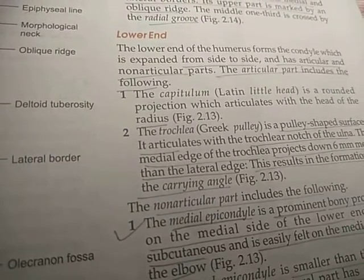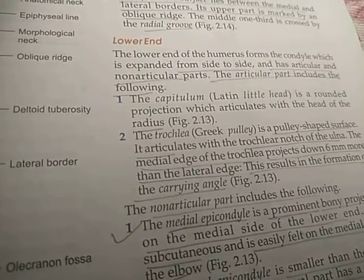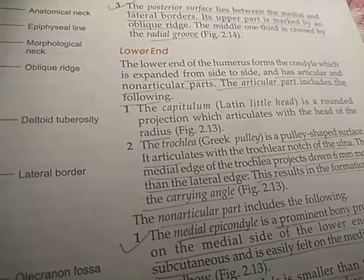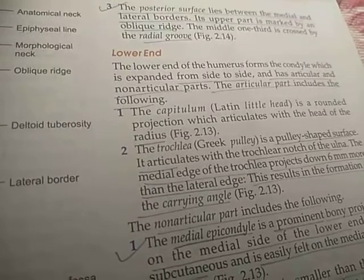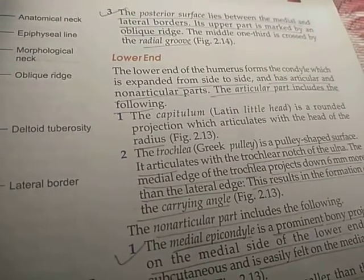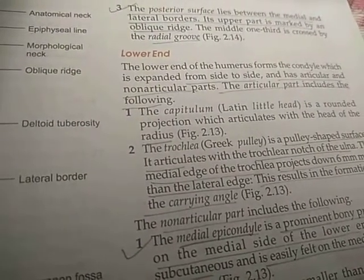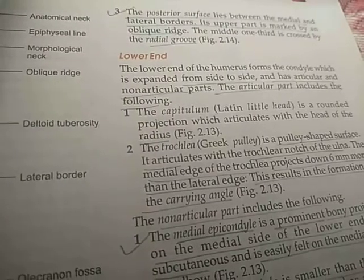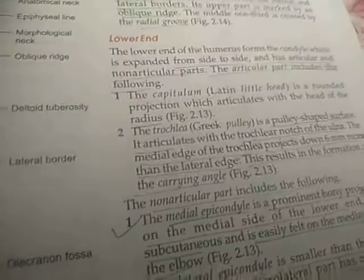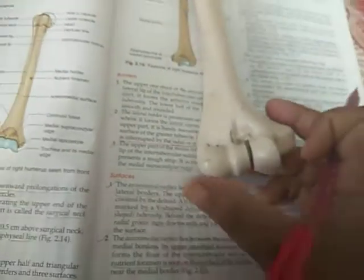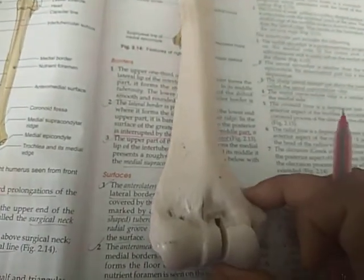Every long bone has three parts: an upper end, a shaft, and a lower end. Today we will discuss the lower end. The lower end of the humerus forms the condyle which is expanded from side to side and has articular and non-articular parts. The humerus is rounded and the lower end is expanded from side to side.